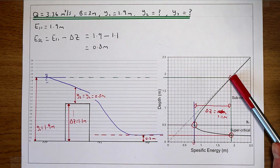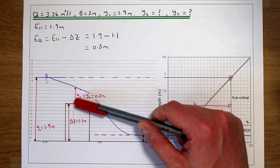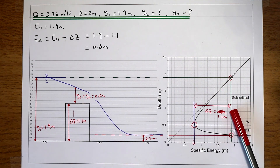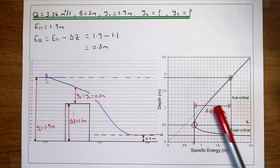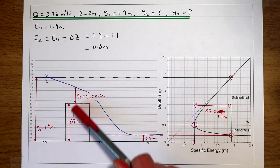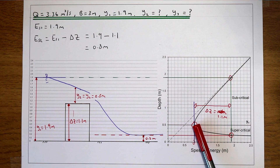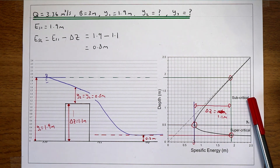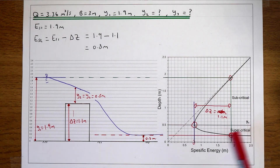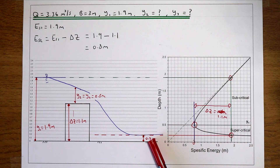So in this case, we started with an initial specific energy level and subcritical flow. The blockage caused us to lose 1.1 metres of energy, which took us down to the critical flow depth of 0.5 metres over the obstacle. Because we hit the critical flow depth, we had a transition from subcritical to supercritical flow, and the downstream flow depth corresponded to a supercritical depth of 0.2 metres.